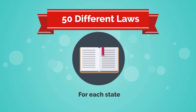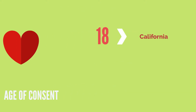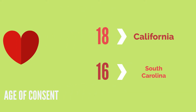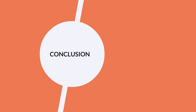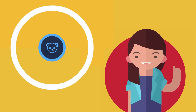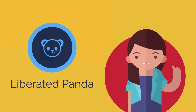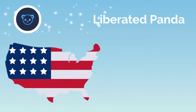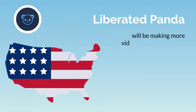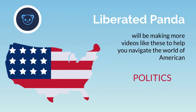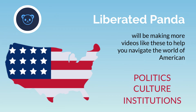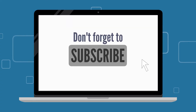Here's some state trivia. Did you know the age of consent is 18 in California, but 16 in South Carolina? Still have questions? No worries. Liberated Panda has got you covered. We'll be explaining these animated explanatory videos with our weekly companion videos. In addition, Liberated Panda will be making more videos like these to help you navigate the world of American politics, culture, institutions, and more. So stay tuned for more videos.